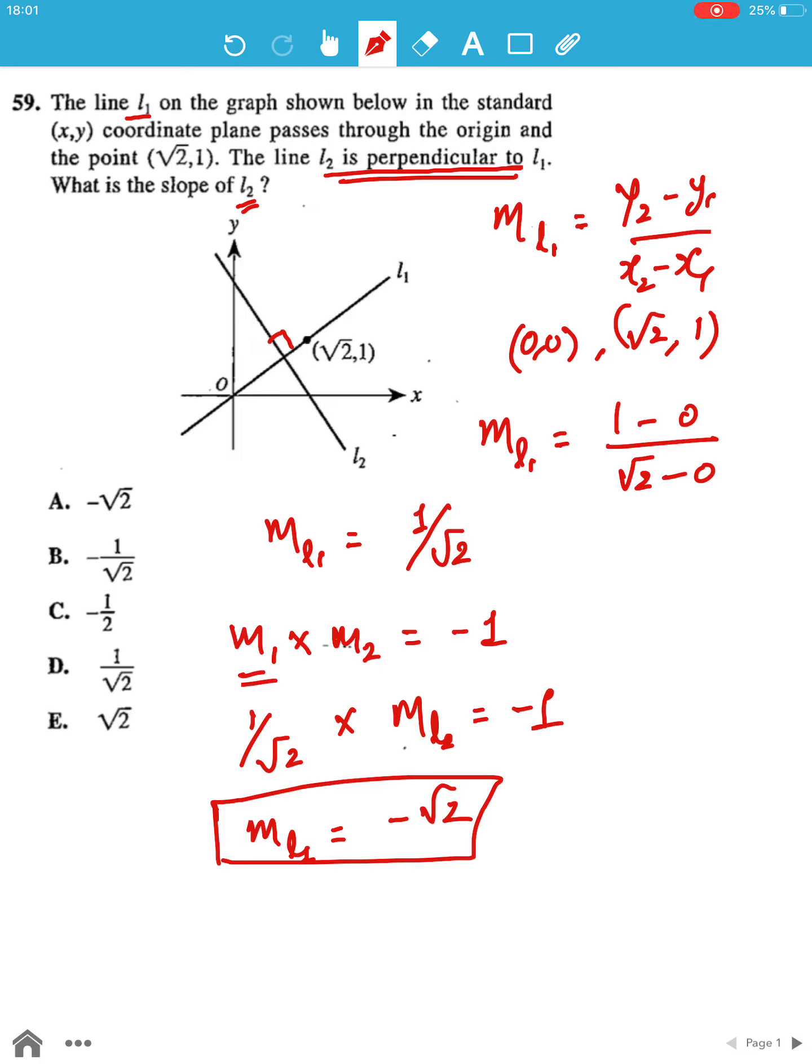And this is the gradient or the slope for line L2, which is negative root 2, and this is given by option A, which is the correct answer.